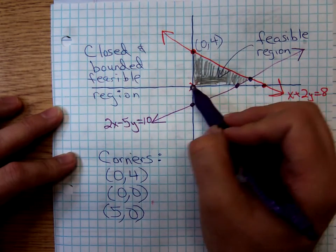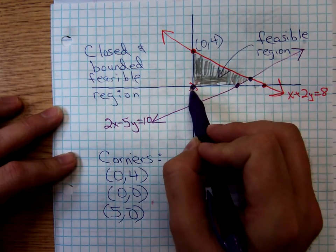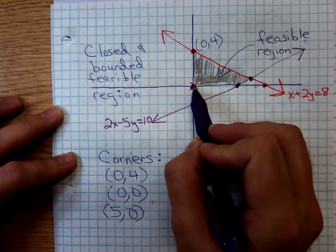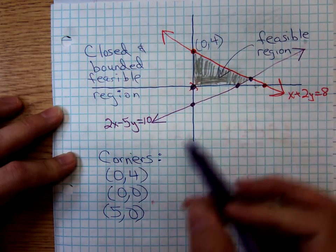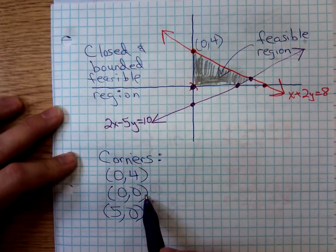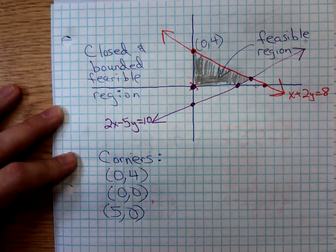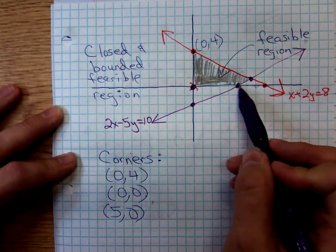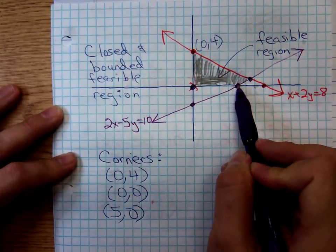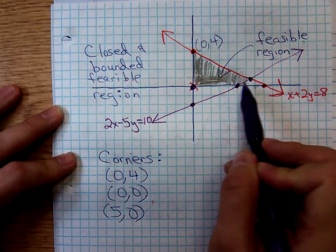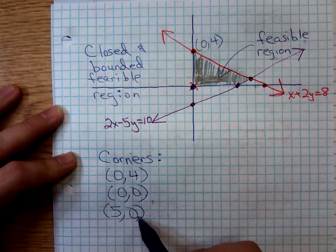Then we move down and we're ready to change lines. So there's the corner point 0, 0. We move over here and there's the corner point 5, 0.